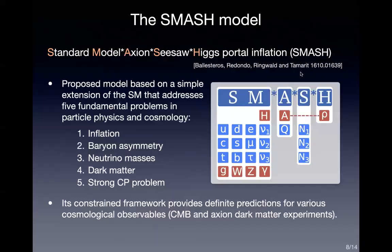In our recent paper, we pointed out that the SMASH model gives some interesting implications for gravitational wave direct detection experiments. The SMASH model was proposed to address five fundamental problems in particle physics and cosmology simultaneously, including inflation, baryon asymmetry, neutrino masses, dark matter, and the strong CP problem.